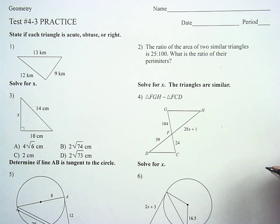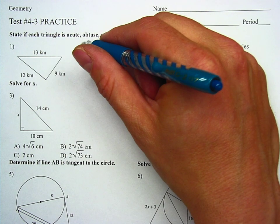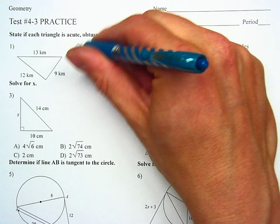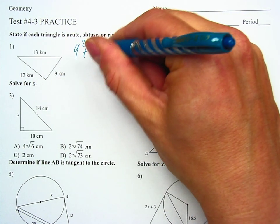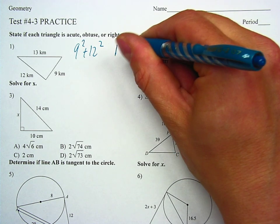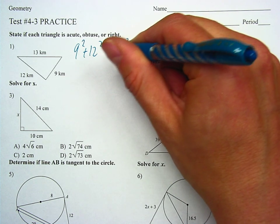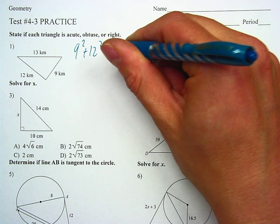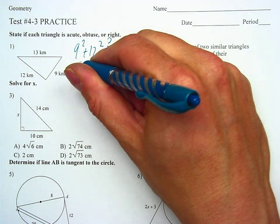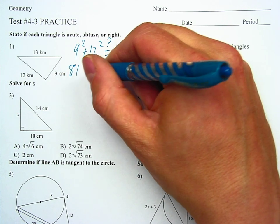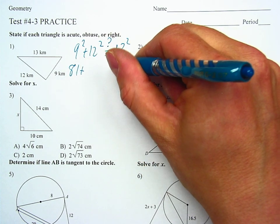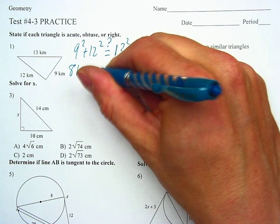Question 1, Pythagorean Theorem. We're going to take the two legs squared and add them together. We're going to compare that with the hypotenuse squared and see if it's equal, less than, or greater than in value. So 9 squared is 81, 13 squared is 169, and 12 squared is 144.